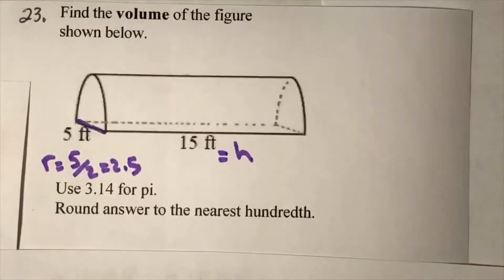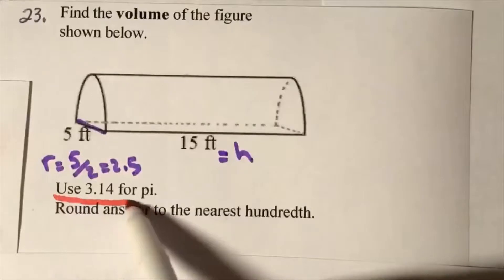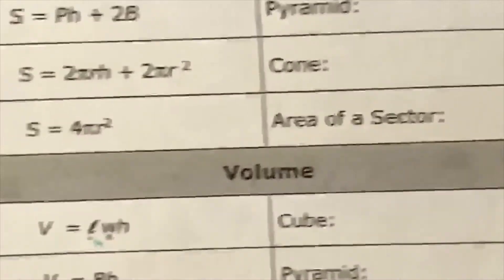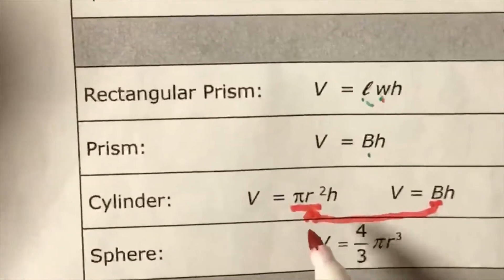Keep in mind that we're going to let pi be 3.14. You have to find the volume of this figure, so the volume of a cylinder—you go here and you get your formula for that and you write that down.